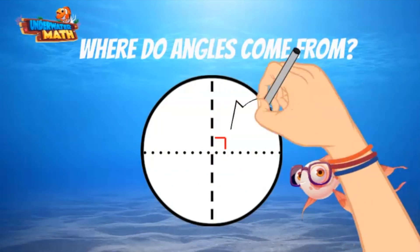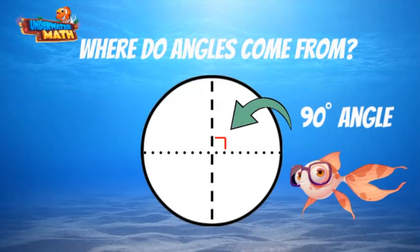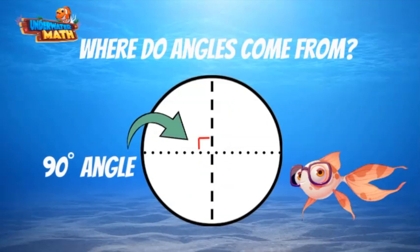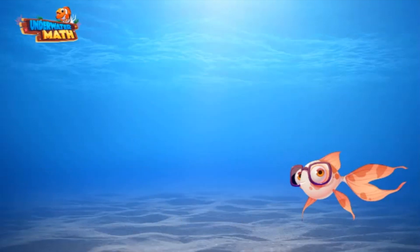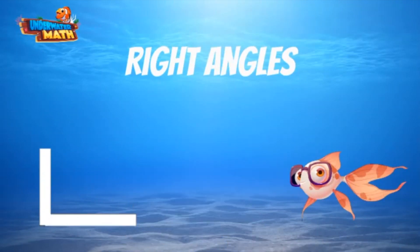If you cut it in half again, you have a 90 degree angle, which is formed by two perpendicular lines. There are four 90 degree angles in a circle. Often we see angles outside of circles. Here are two right angles, both formed by perpendicular lines.